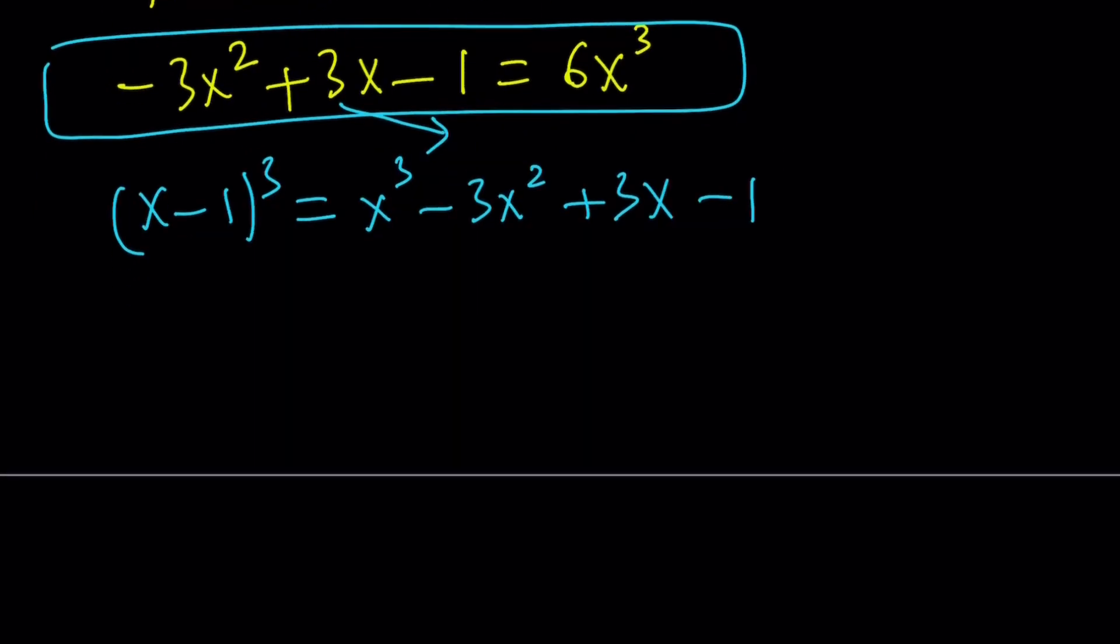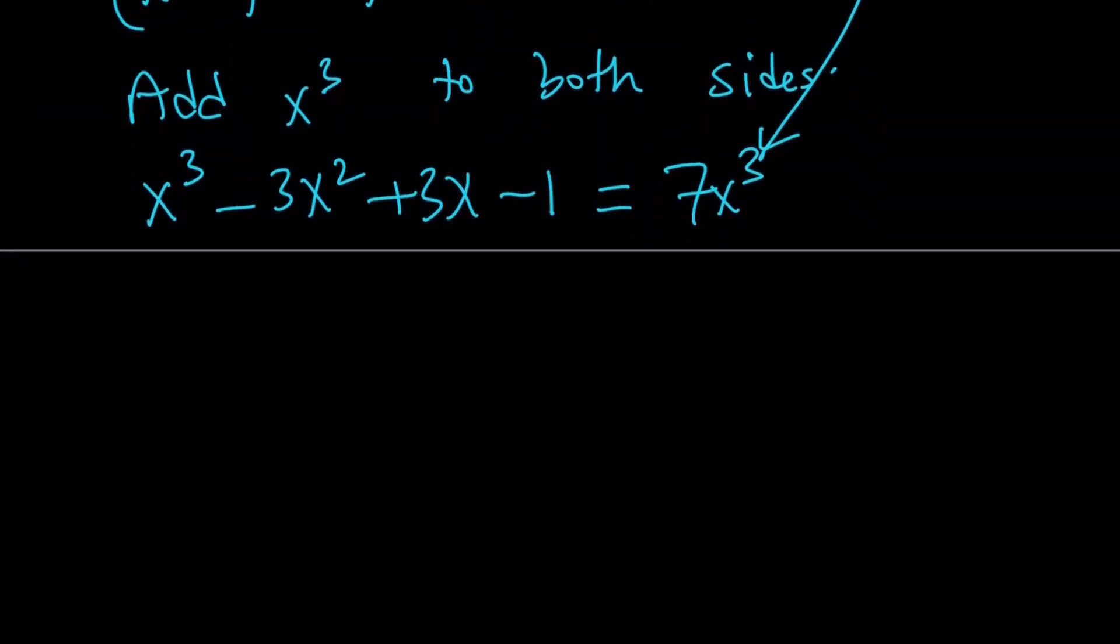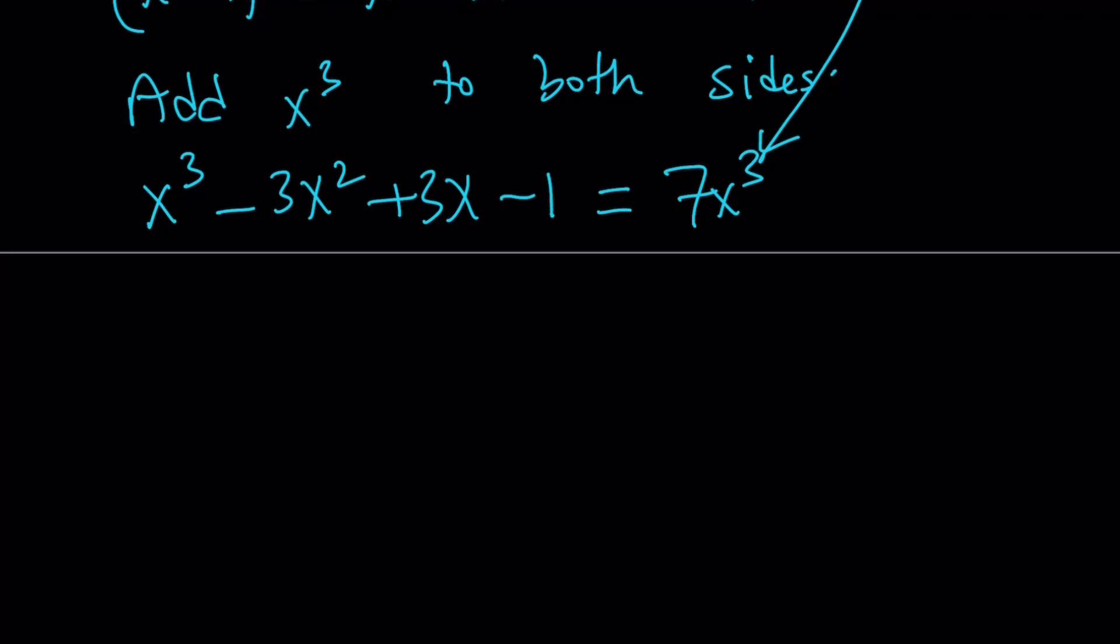And guess what? We can add x³ to both sides. Let's do it. Add x³ to both sides. So, I get x³ minus 3x² plus 3x minus 1. And, it kind of looks like subtracting, but we're adding because 3x² has a negative sign. And, on the right-hand side, if you add x³, you're going to get 7x³ because 6x³ plus x³ is 7x³. Make sense? Okay, hopefully, now this is more clear. On the left-hand side, I have a perfect cube.